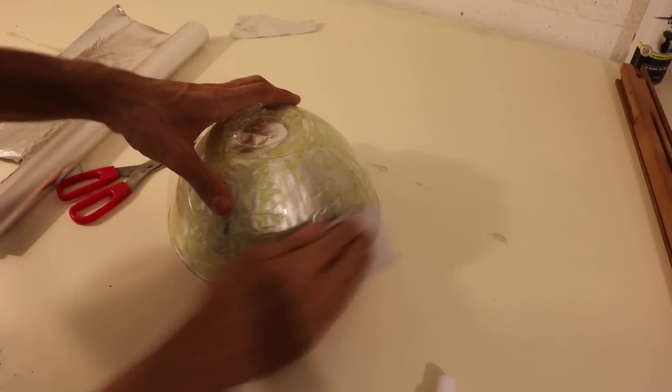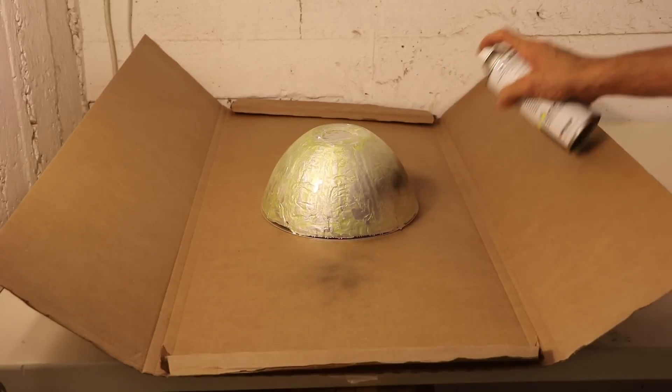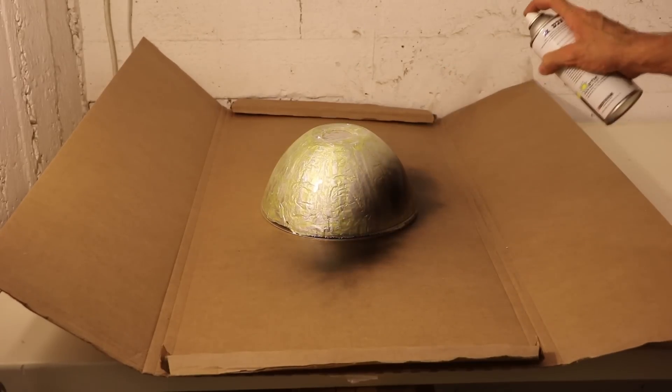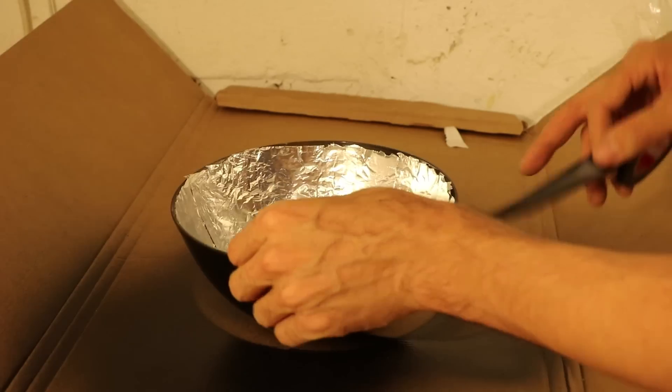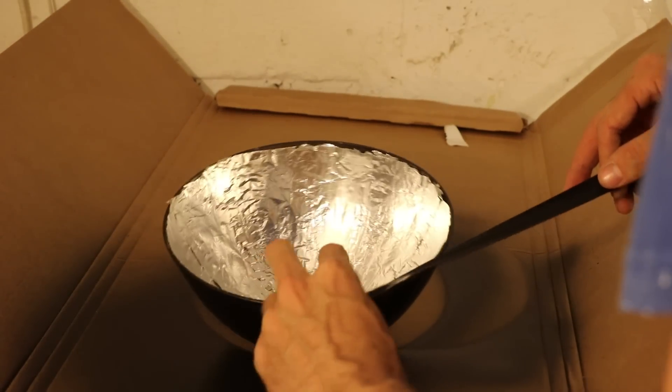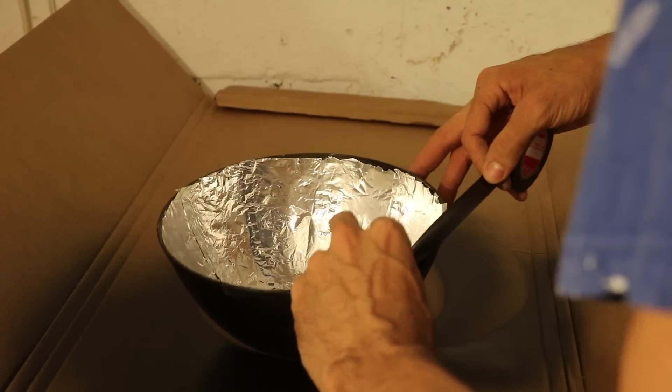I then sanded the exterior of the bowl, in preparation for a few coats of black spray paint. I found that it sticks better this way. I finished off the reflector by protecting the ends of the aluminum foil with some electrical tape. It just looks better this way.